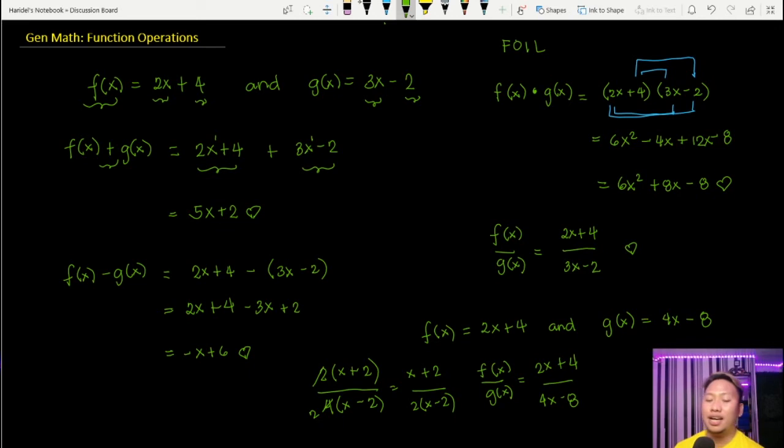So getting the quotient is tricky sometimes because you need to check if there's something to factor, and after that, if there's something to cancel. If there isn't, then stay as is. So I hope you master how to process the greatest common factor.